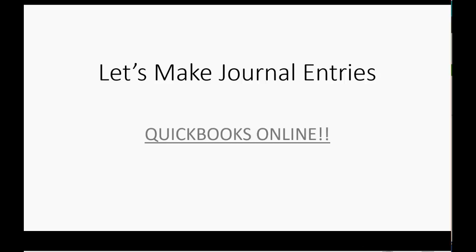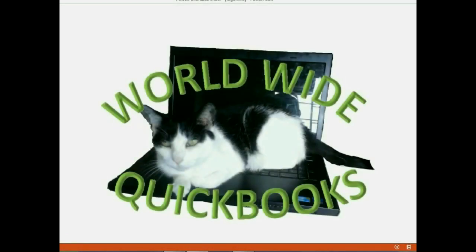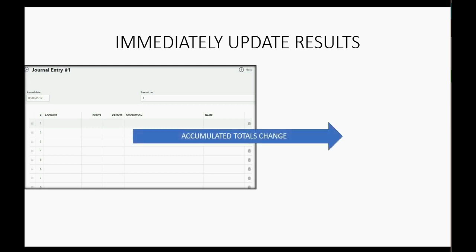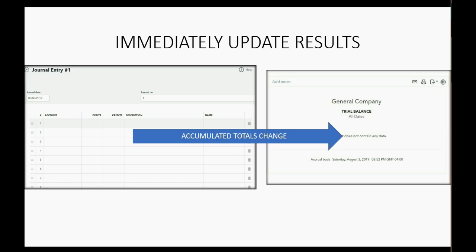Now let's make our journal entries with QuickBooks Online. Remember, all we have to do is enter the transaction in the journal entry window and the accumulated totals will immediately change in the trial balance. These are the same transactions that we have been doing for the entire course.